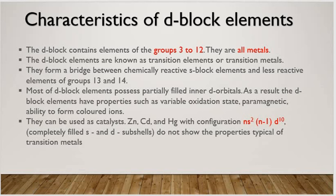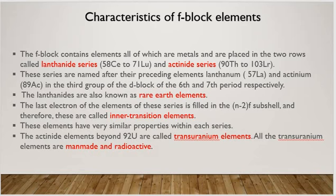As a result, the D block elements have the properties like variable oxidation state, paramagnetism and the formation of coloured ions. They are used as catalysts like zinc, cadmium, mercury and these are the elements which do not show the properties of typical transition metal.